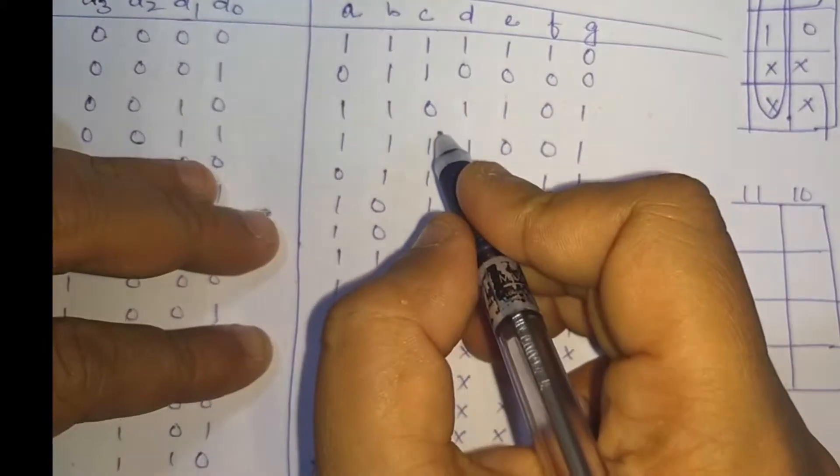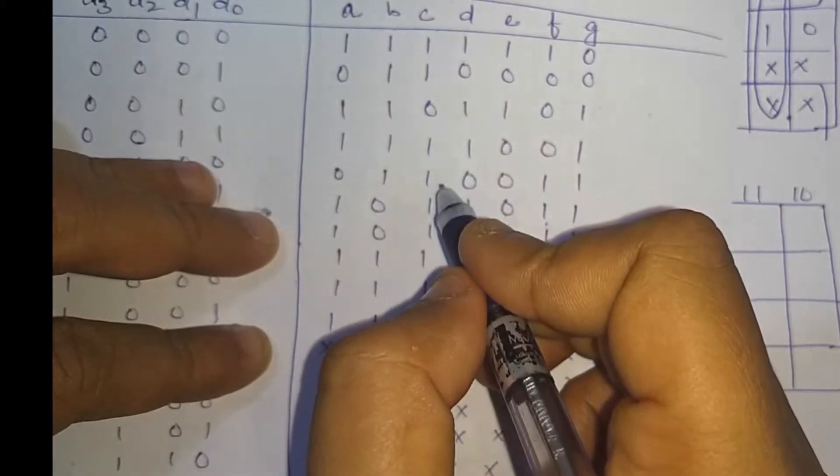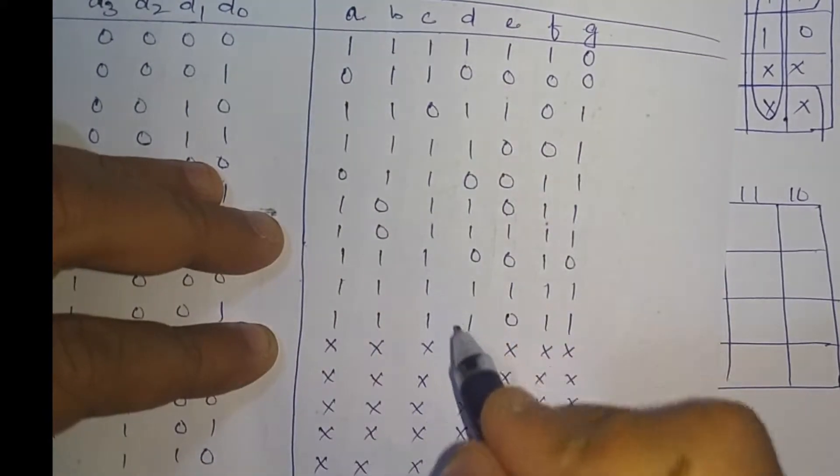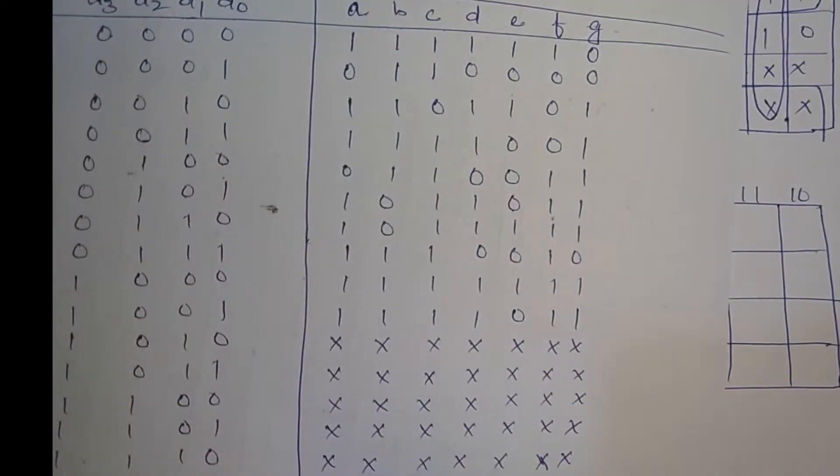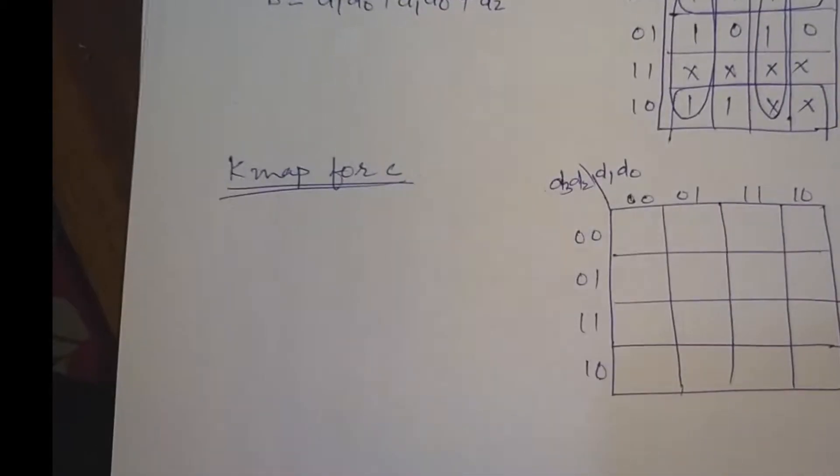For segment C, the K-map values are 1, 1, 0, 1, 1, 1, 1, 1, giving the expression involving D1.